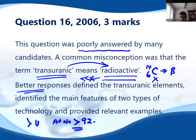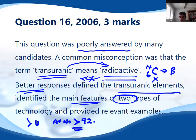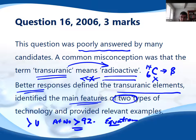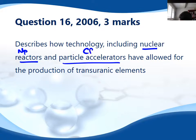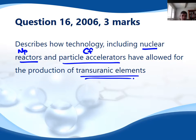Better responses define transuranic elements as those with atomic number beyond 92 and describe the main features of both types of technology with examples. Always include nuclear equations to help explain things, and make sure you cover both nuclear reactors and particle accelerators. Include something like neptunium from a nuclear reactor with its equation, and something like californium produced in a particle accelerator — both transuranic, both synthetic, as neither occurs naturally on Earth. Thanks for watching.